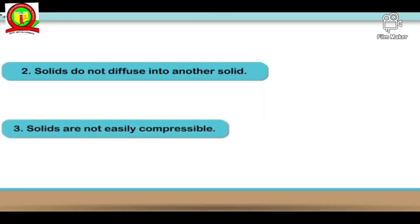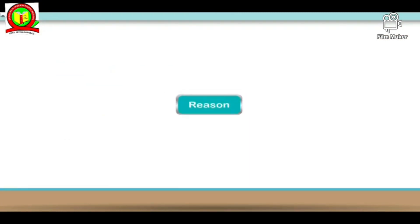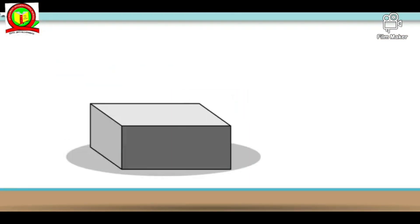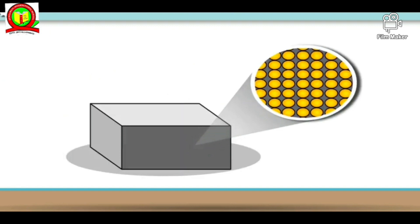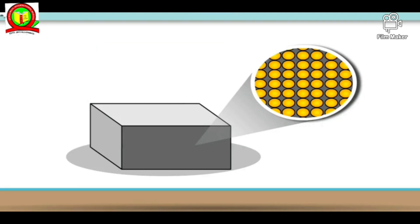The third property is that solids are not easily compressible. We cannot press solids and change their shape. The reason is that in solids, the molecules are very closely packed and cannot be reduced further.